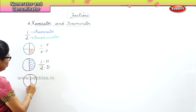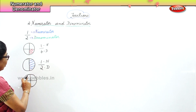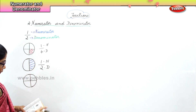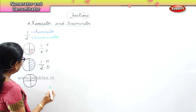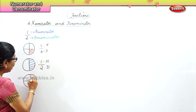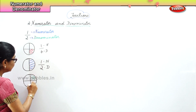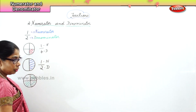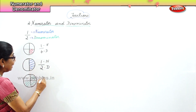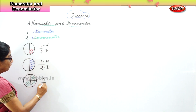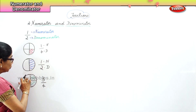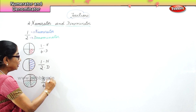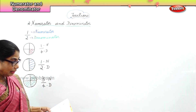This circle is divided into two, then again into two, giving us four parts. I am going to color three parts out of the four parts. The total number of portions is four, and three portions are colored. So three is the numerator and four is the denominator.